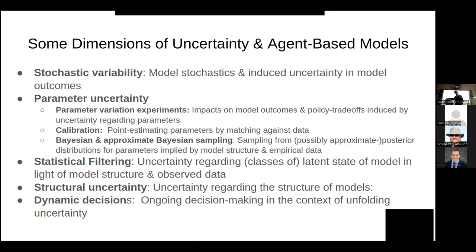With agent-based models, we have extra texture compared to simpler model types like ordinary differential equation models. We have issues of stochastic variability, meaning we're trying to estimate parameter values in a context where the model produces variable outcomes for a given set of assumptions. Even if you assume a certain value of the parameters and run the model several times, you get different results. And somehow in calibration you need to zero in on the most plausible parameter values in the context of this variability.